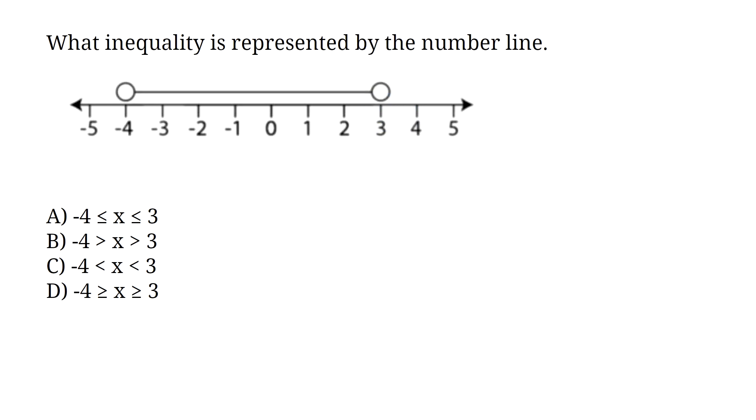What inequality is represented by the number line? There are three things we are looking at here. First, the endpoints — here we have negative 4 and 3. All the answer choices have negative 4 and 3, so we cannot eliminate any yet. Next, we look at whether the endpoint is shaded or not shaded. If it is shaded, the inequality must have an equal sign. If it is not shaded, the inequality does not have an equal sign. Both endpoints are not shaded, so we can eliminate choice A and choice D — they have equal signs.